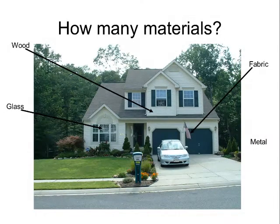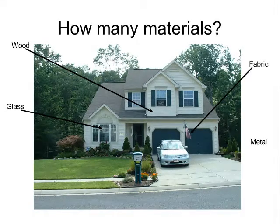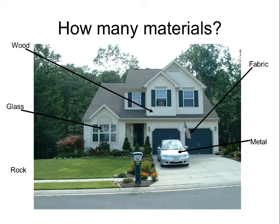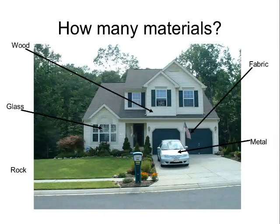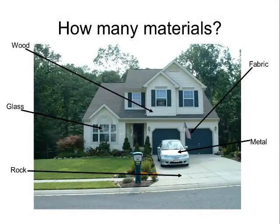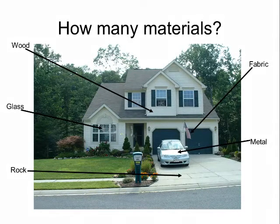Metal — do you see anything made out of metal in this picture? The car. The car is made out of metal. Rock — do you see anything made out of rock? The floor is made out of rock, plus there are rocks around the bushes, and the house.